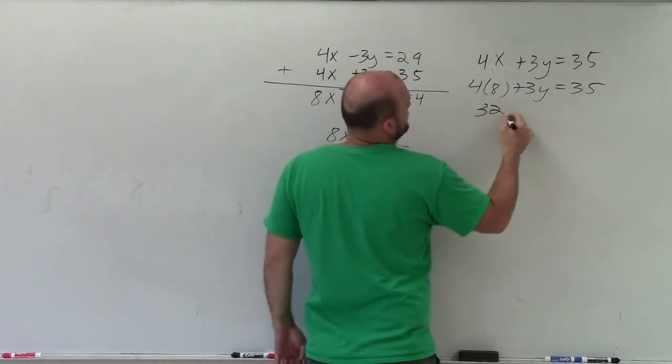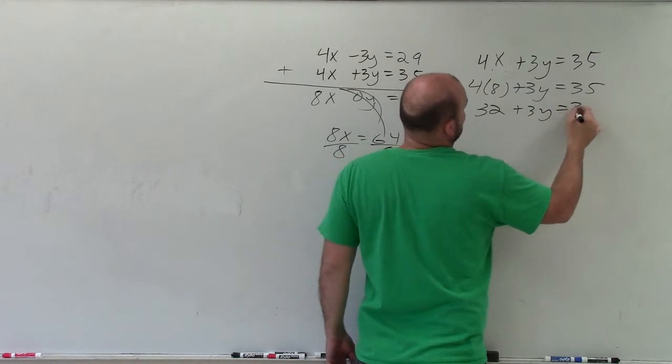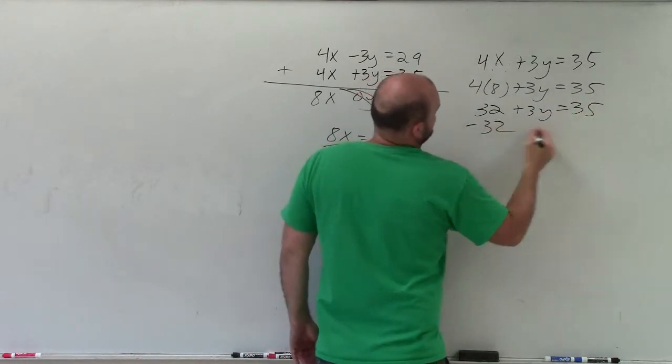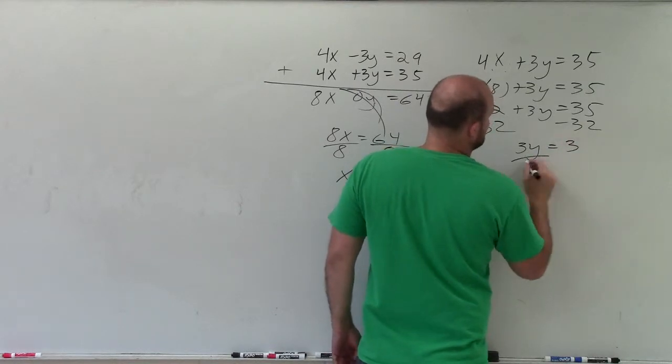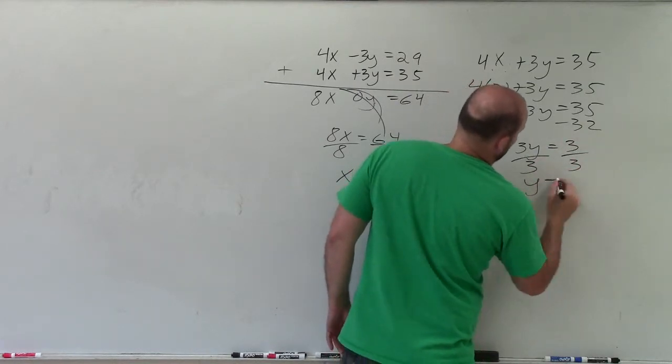4 times 8 plus 3y equals 35. 4 times 8 is 32 plus 3y equals 35, subtract 32, subtract 32, 3y equals 3, divide by 3, divide by 3, y equals 1.